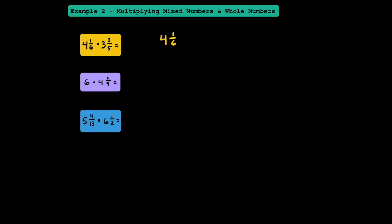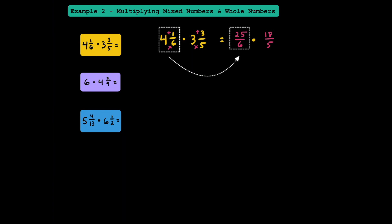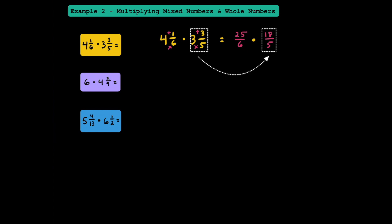In this first example of multiplying mixed numbers, we have 4 and 1 sixth multiplied by 3 and 3 fifths. When multiplying mixed numbers, the first thing we need to do is convert them both to improper fractions. Multiplying 4 times 6 gives 24, and adding 1 gives 25, so 4 and 1 sixth equals 25 sixths. For 3 and 3 fifths: 3 times 5 is 15, plus 3 is 18, so 3 and 3 fifths equals 18 fifths.